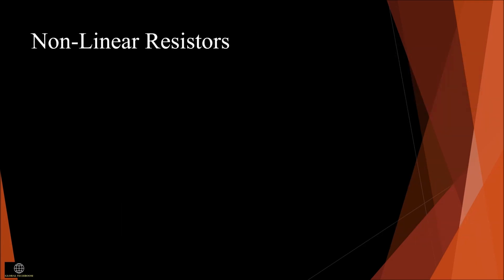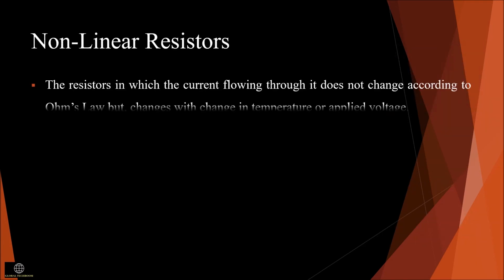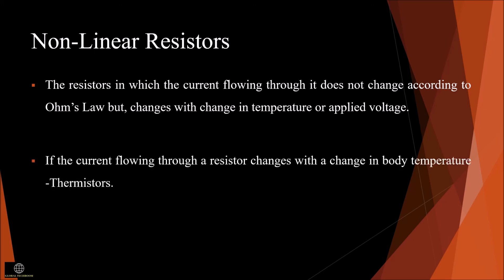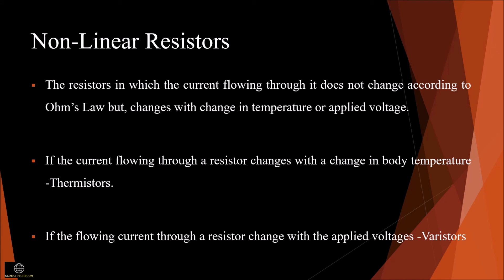Non-linear resistors are resistors in which the current flowing through them does not change according to Ohm's law, but changes with the change in temperature or applied voltage. If the current through a resistor changes with a change in body temperature, then it is called a thermistor. If it changes with applied voltage, it is called a varistor or voltage dependent resistor.